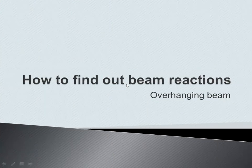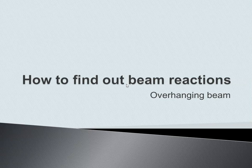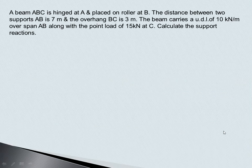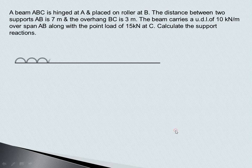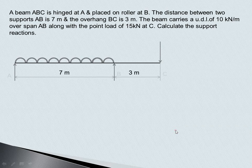Let us try to understand how to find beam reactions in case of an overhanging beam. Suppose we have beam ABC which is hinged at point A and placed on rollers at point B. The span length AB is 7 meters and there is an overhang BC of 3 meters.